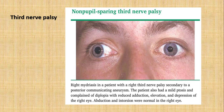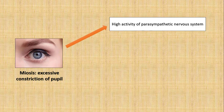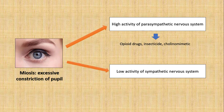Miosis is excessive constriction of the pupil. It can occur because of high activity of the parasympathetic nervous system, such as from opioid drugs, insecticides due to organophosphates, and cholinomimetic drugs. It can also result from low activity of the sympathetic nervous system, such as from antipsychotic drugs, Horner syndrome, and Adie's pupil.